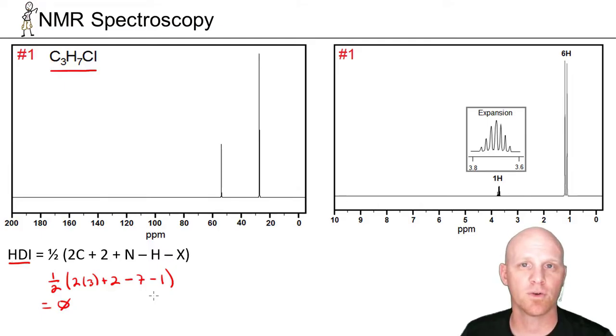And we'll find out that our hydrogen deficiency index here is 0. So here we have 0 degrees of unsaturation. That means no pi bonds, so no double or triple bonds, and no rings. No cycloalkanes, no benzene either, implied there as well. No pi bonds, no rings whatsoever in this compound.